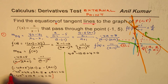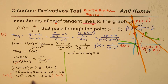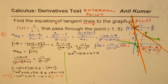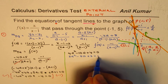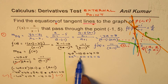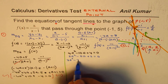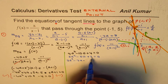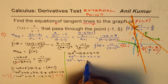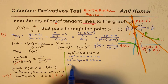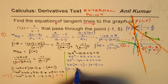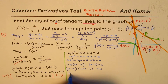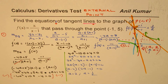Multiplying through by -1 gives 4a² - 10a + 4 = 0. Dividing by 2: 2a² - 5a + 2 = 0. Factoring: 2a(a - 2) - 1(a - 2) = 0, so (2a - 1)(a - 2) = 0. This gives a = 2 and a = 1/2. So we have two values of a, confirming there are two tangent points.